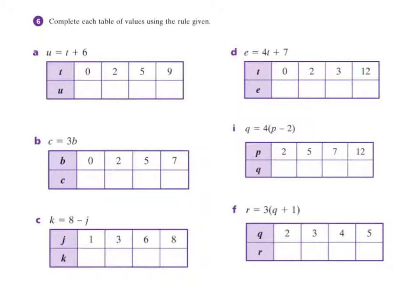These ones are even easier. All it's giving you is the rule straight away, and then the values. So I've just got to put this in here — that's my T value. Nothing plus 6 equals 6. 2 plus 6 equals 8. This one — 3B means 3 times B. So whatever my B is, I've got to times it by 3 — that means I've got 3 lots of B. 3 times nothing is nothing. 3 times 2 — there's my 2, that goes in there as my B value — 3 times 2 is 6.